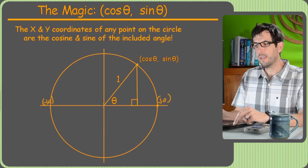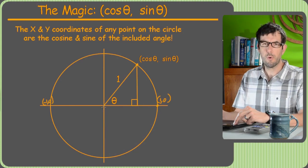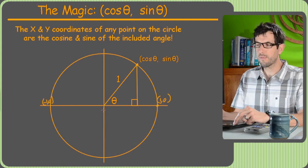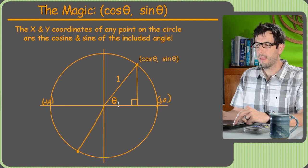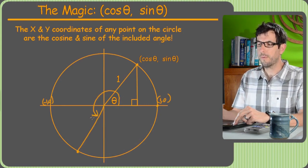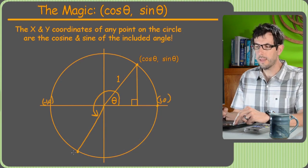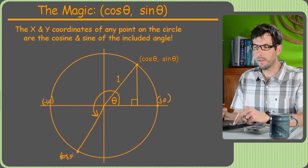If we drew a theta, it might be confusing about where to draw it, but if theta was more than 180 degrees — for example, like it was down here somewhere — theta would be this entire angle that I've drawn the arc through, and again, this point is going to be (cosine, sine).